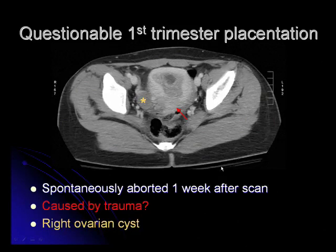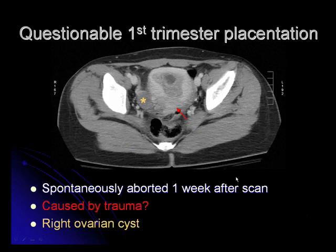This is an example of a questionable placenta during the first trimester. This patient had originally come in for trauma. On the CT scan, you can see a large subchorionic fluid collection pointed by the red arrow. Incidentally, there is a finding of a right ovarian cyst. At this time, the patient was deemed not to have a placental abruption. However, seven days after the scan was taken, the patient experienced vaginal bleeding and spontaneous abortion. The collapsed gestational sac was confirmed by ultrasound. It is unknown whether the abortion was caused by trauma or by a pre-existing condition.